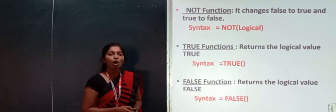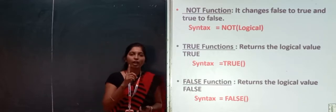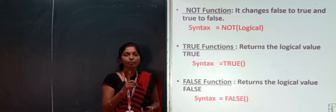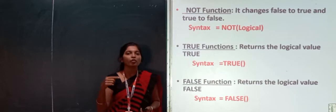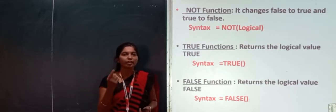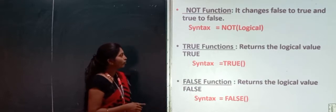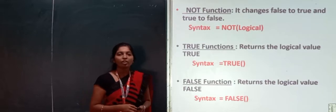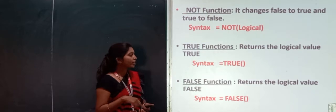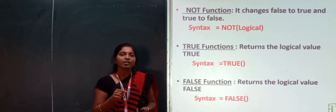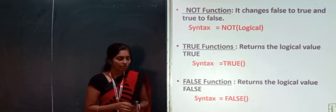The next one is the NOT function. It changes false to true and true to false — if the argument is 1 it returns 0, and if the argument is 0 it converts to 1. Then the TRUE function returns the logical value true, and the FALSE function returns the logical value false. In a particular video we will discuss how it really works.